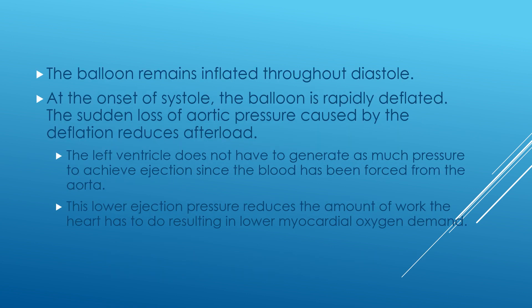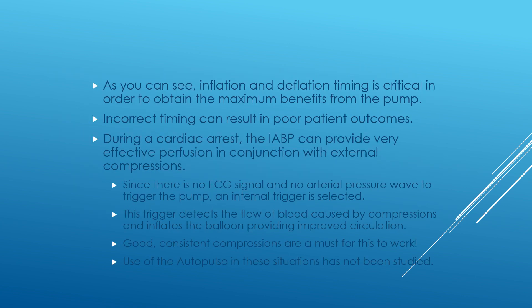The balloon remains inflated throughout diastole. At the onset of systole, the balloon is rapidly deflated. The sudden loss of aortic pressure caused by deflation reduces the afterload. The ventricle does not have to generate as much pressure to achieve ejection since blood has been forced from the aorta. The lower ejection pressure reduces the amount of work the heart has to do, resulting in a lower myocardial oxygen demand. As you can see, the inflation and deflation timing is critical in order to obtain the maximum benefits from the pump, and incorrect timing can result in poor patient outcomes.